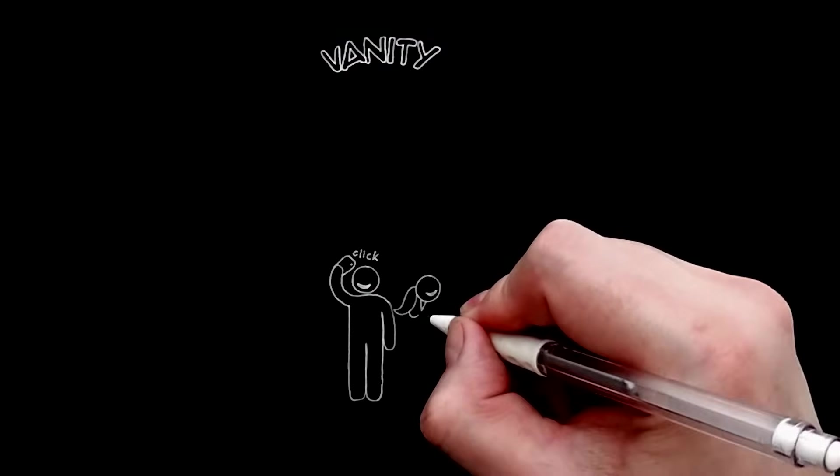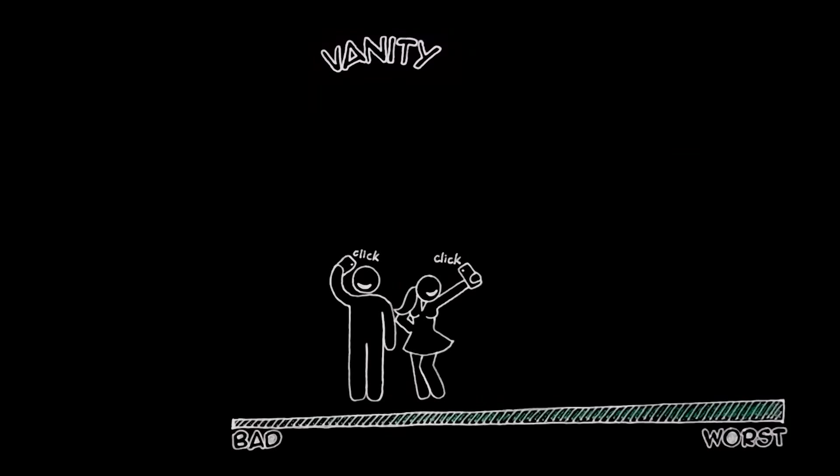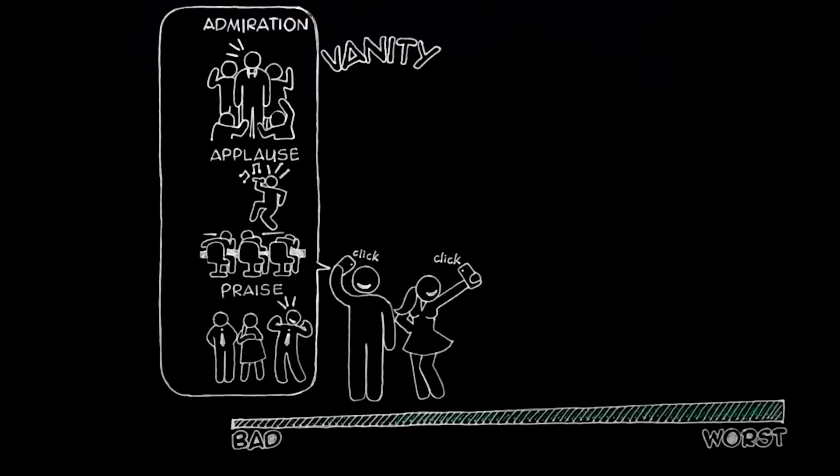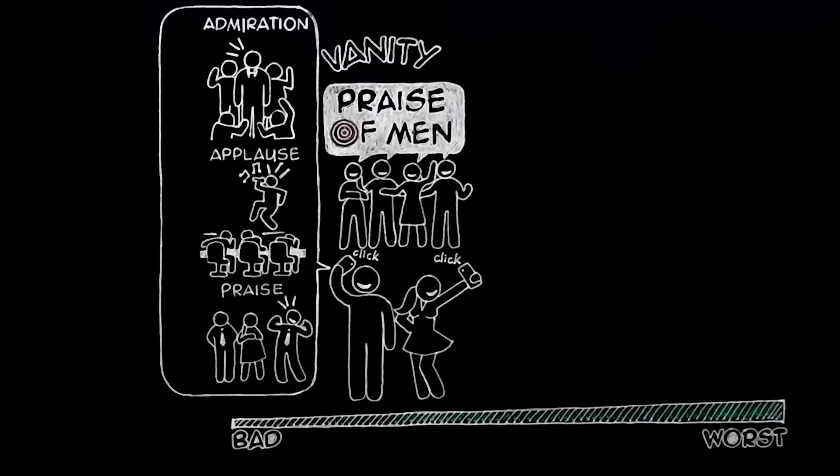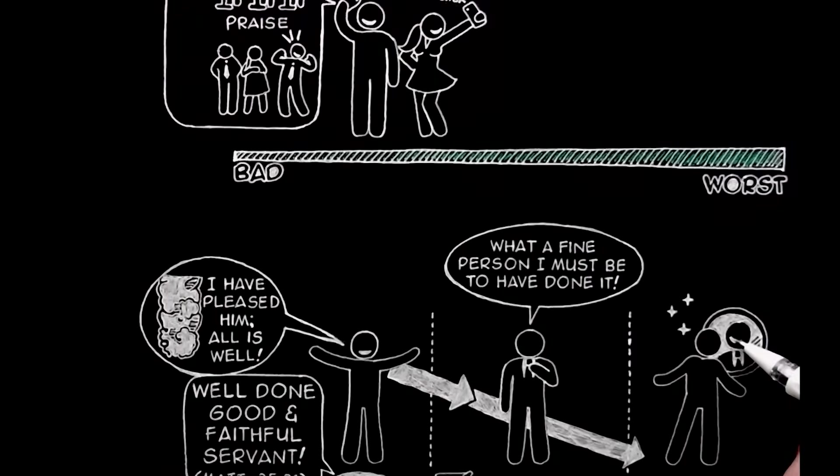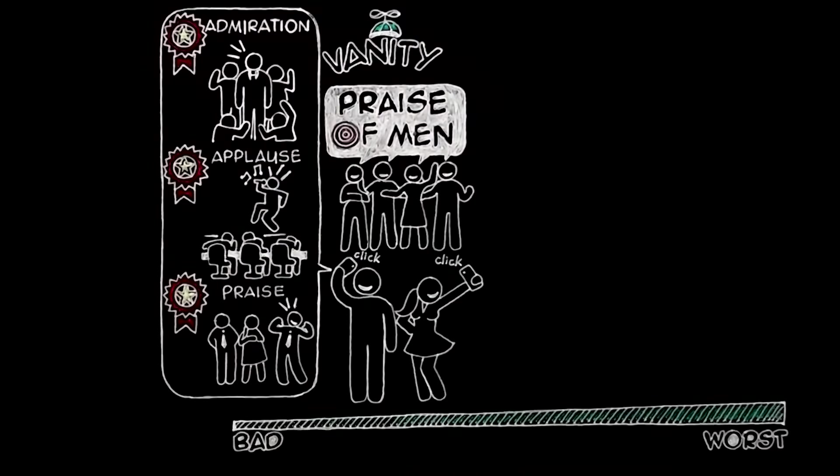That is why vanity, though it is the sort of pride which shows most on the surface, is really the least bad and most pardonable sort. The vain person wants praise, applause, admiration, too much, and is always angling for it. It is a fault, but a childlike and even, in an odd way, a humble fault. It shows that you are not yet completely contented with your own admiration. You value other people enough to want them to look at you. You are, in fact, still human.